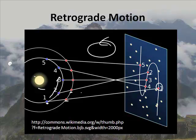That's what makes it go further back, because the Earth is rotating faster than Mars, and so the Earth catches up with Mars, and that's what causes the retrograde motion.